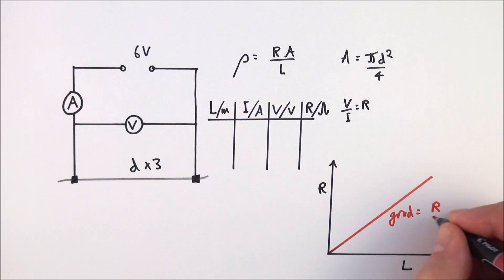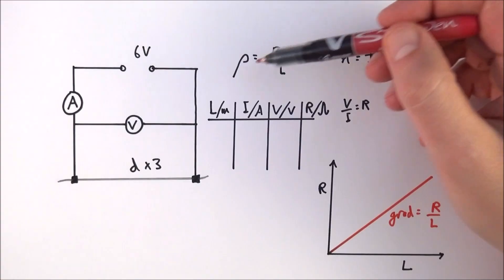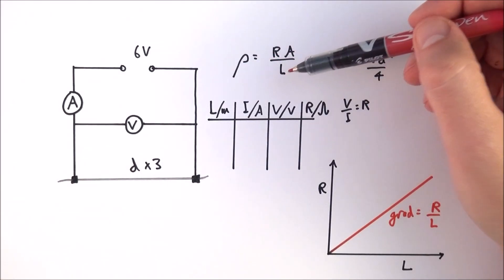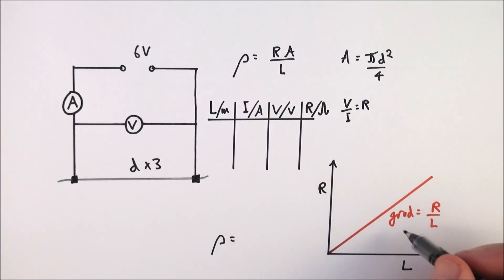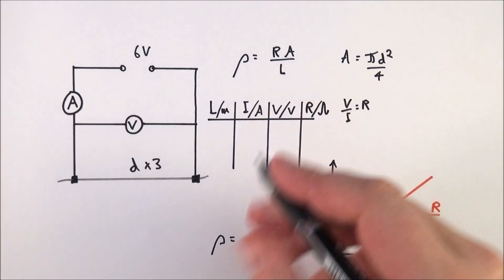This means that the gradient is going to be equal to R over L. That really allows you to work out the resistivity. Remember that resistivity equals RA over L, and that means the resistivity rho is going to be equal to your gradient, which is R over L.